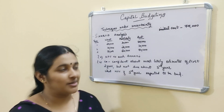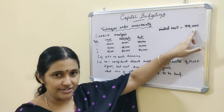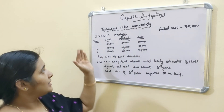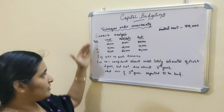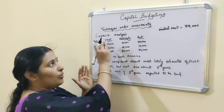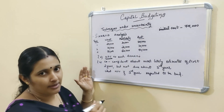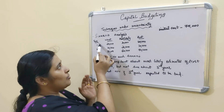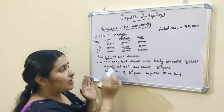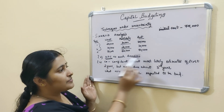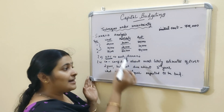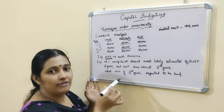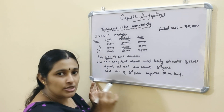For the Scenario Analysis example, the initial investment cost is Rs. 75,000. We have three scenarios: worst case, most likely case, and best case, each with expected cash flows over three years. We are asked two questions: the NPV for each scenario, and noting that the company is confident about most likely estimates for the first two years but uncertain about the third year.